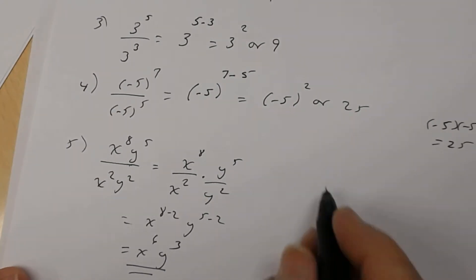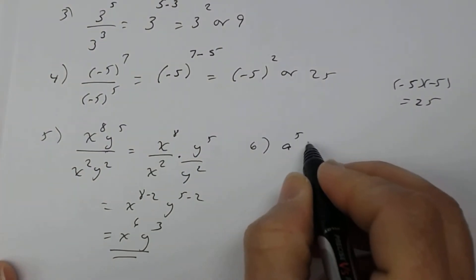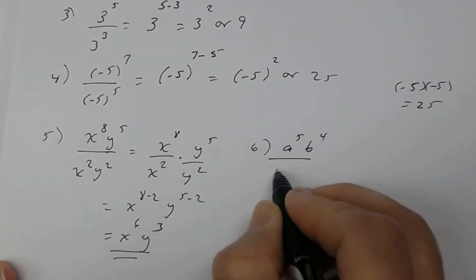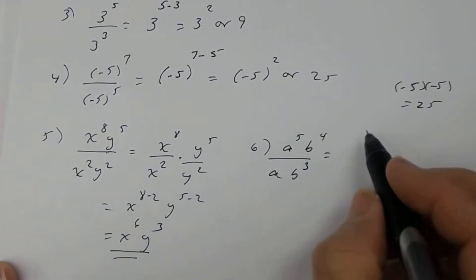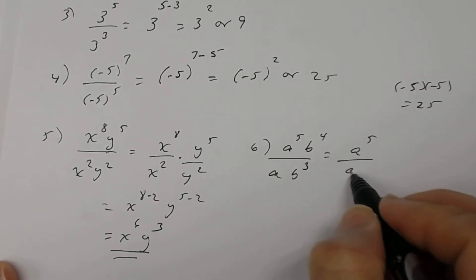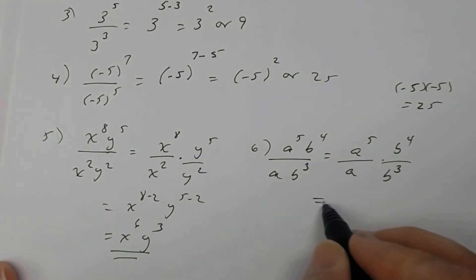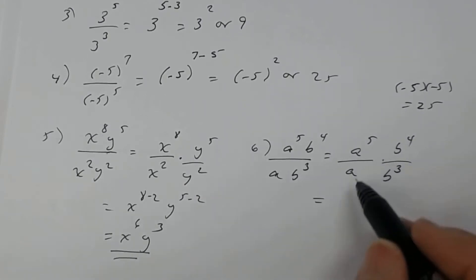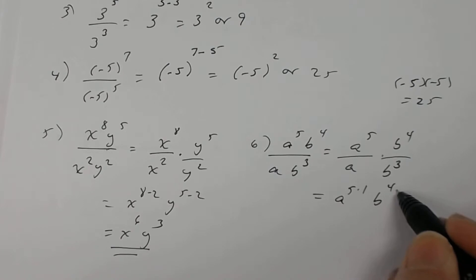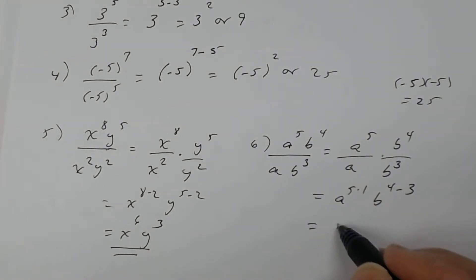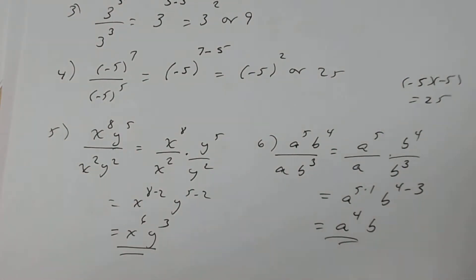Number 6: you have a to the 5th, b to the 4th, divided by a, b cubed. Again, rewrite as separate fractions: a to the 5th divided by a, times b to the 4th divided by b cubed. Divide like bases, subtract exponents — that's a to the 5th subtract 1, b to the 4th subtract 3. So the answer is a to the 4th times b.